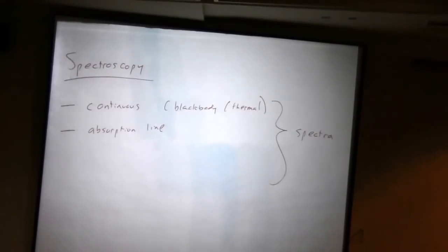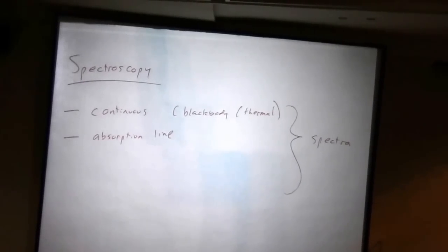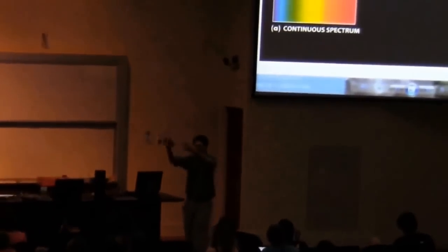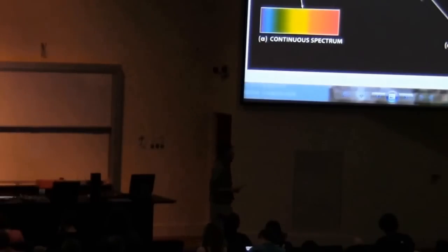You can get that, astrophysically a common way to get that is if there is a cloud of gas between the star. Let's say we're looking at a star, source of continuous light, and us. If there's a cloud of gas in between, and it can be a cloud in space, it could be our atmosphere. Our atmosphere is a gas, and it does the same thing.